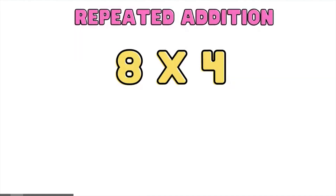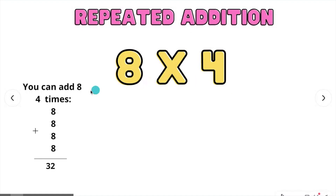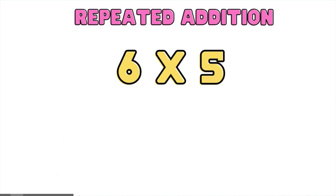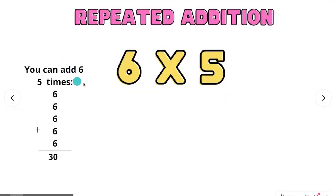Now let's go ahead and try the repeated addition strategy. We have the example 8 times 4: 8 plus 8 plus 8 plus 8 gives us 32. For 6 times 5, you can add 6 five times: 6 plus 6 plus 6 plus 6 plus 6 gives us 30.